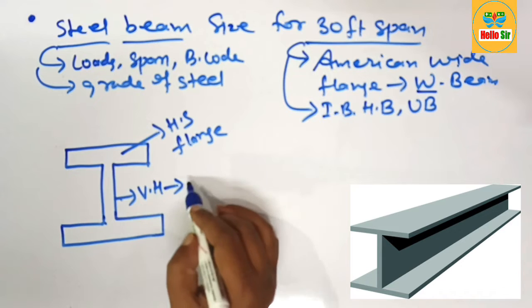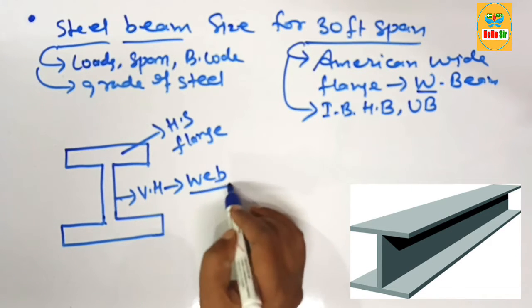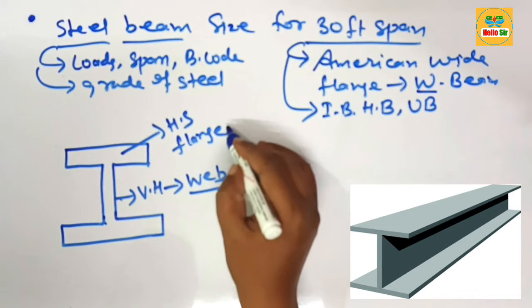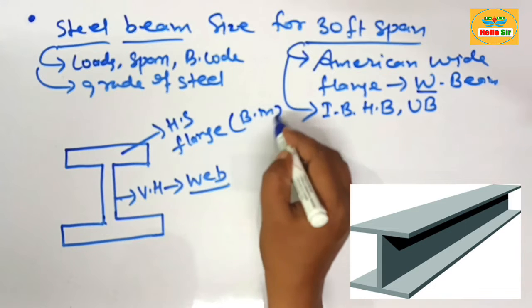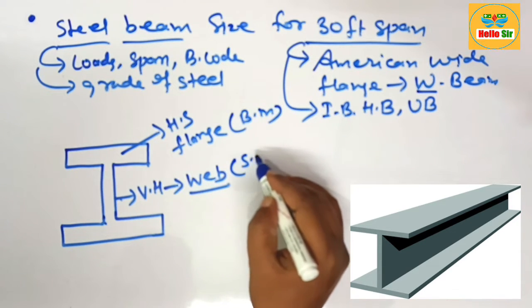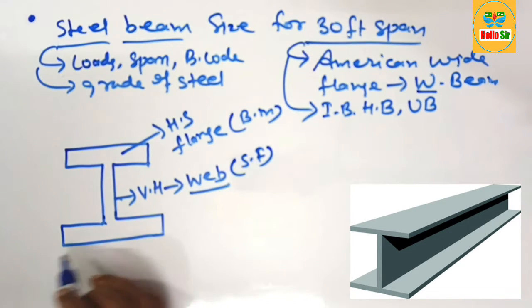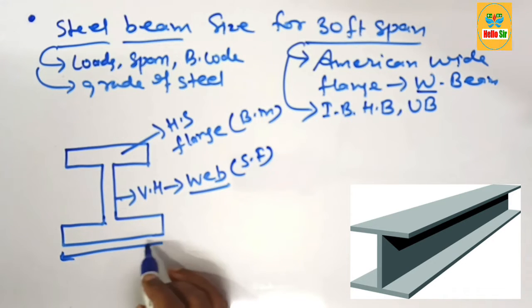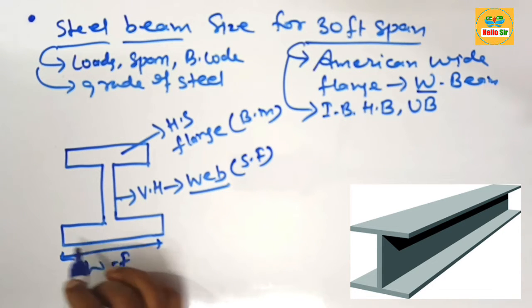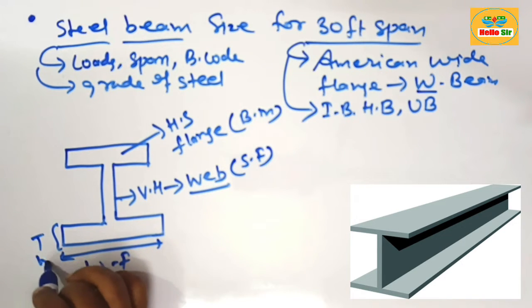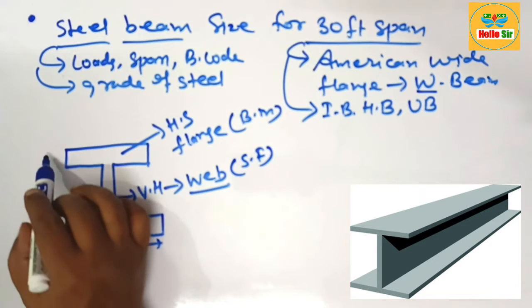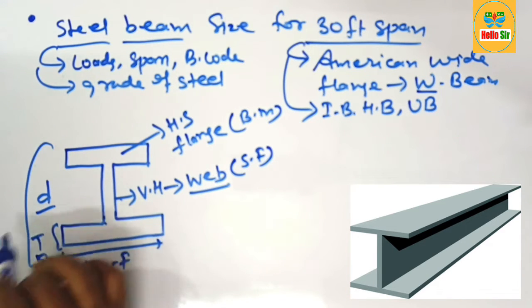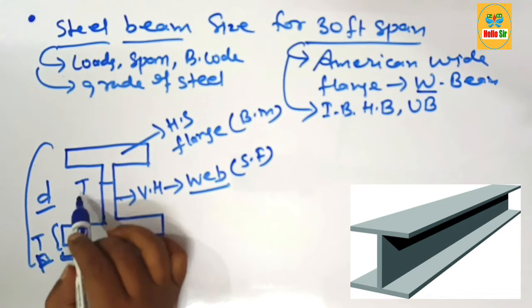Generally the flange resists bending moment and web resists shear forces acting on it. This one is width of flange and that is the thickness of flange. This one is depth of the beam and that is thickness of web. These are the different parts of American wide flange beam.